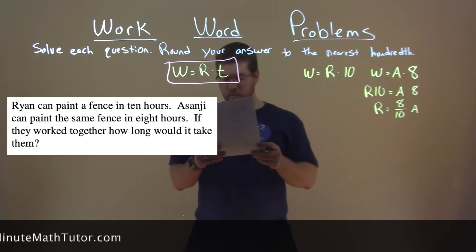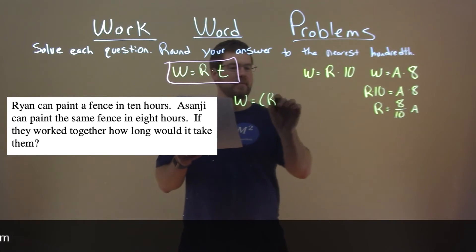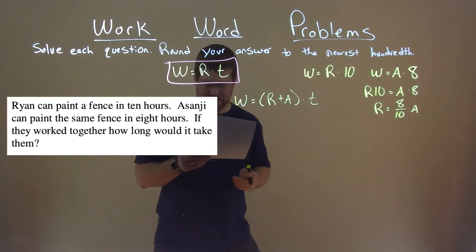So, we know if they work together, our W here is equal to the rates of each one, add together, times time. That's them working together.